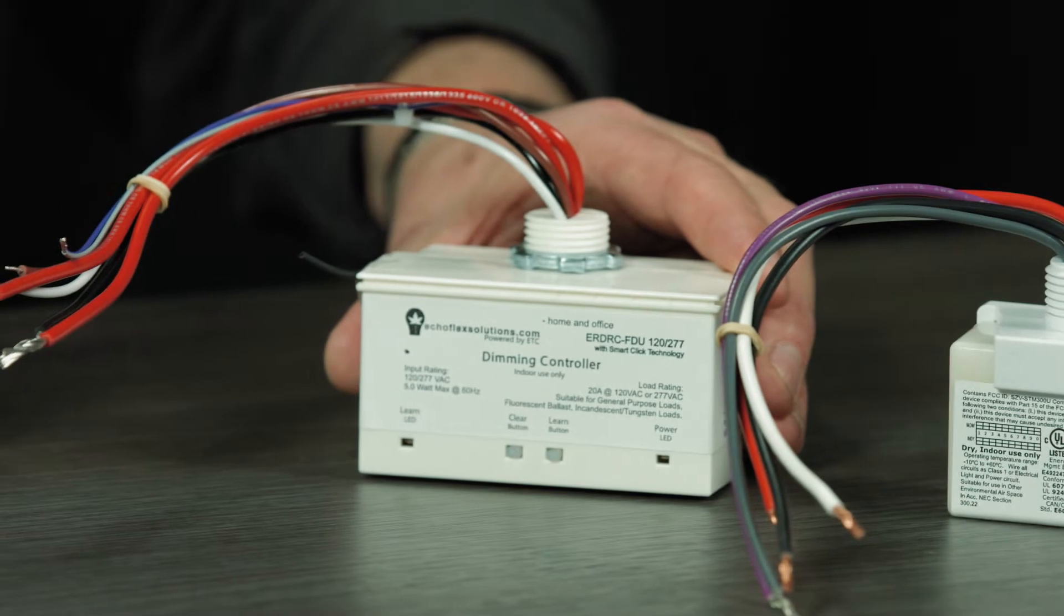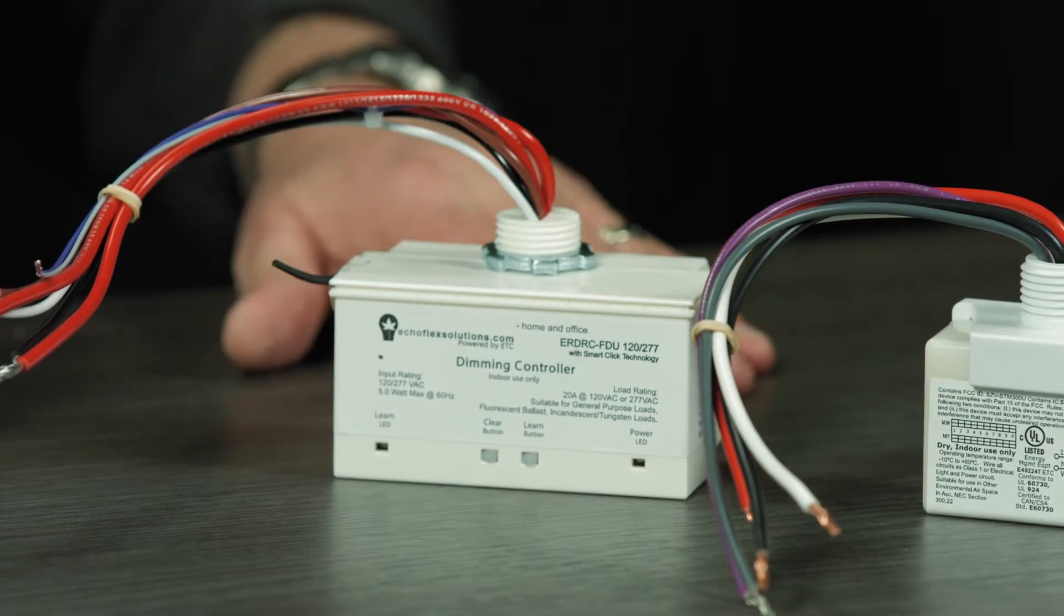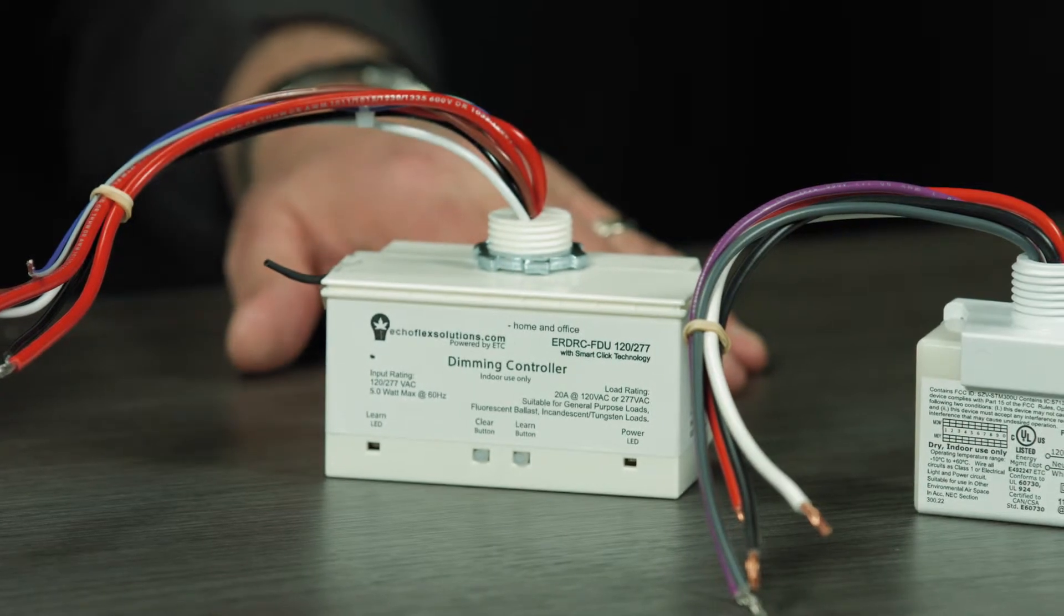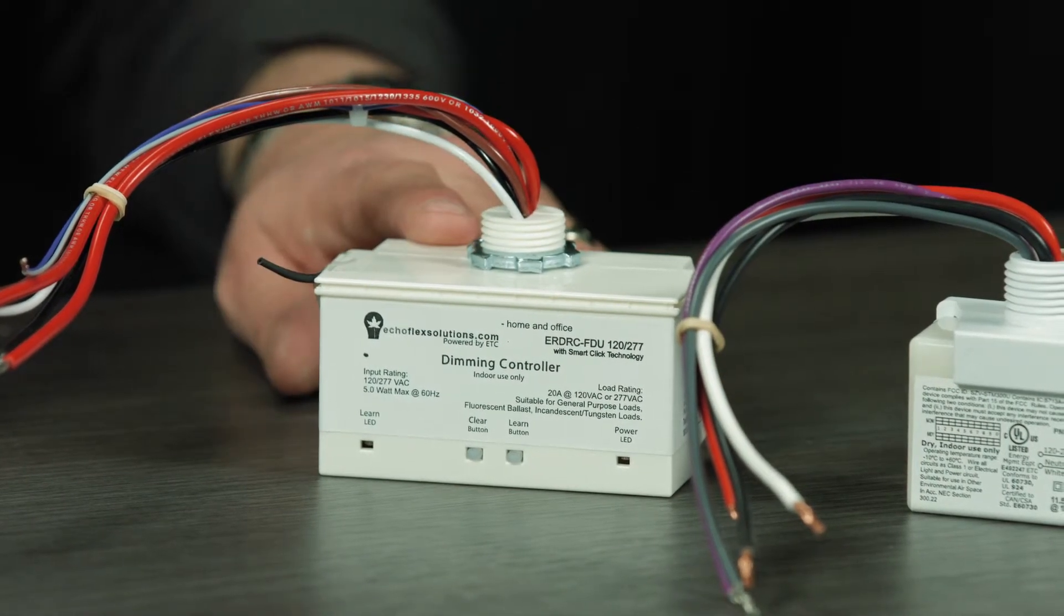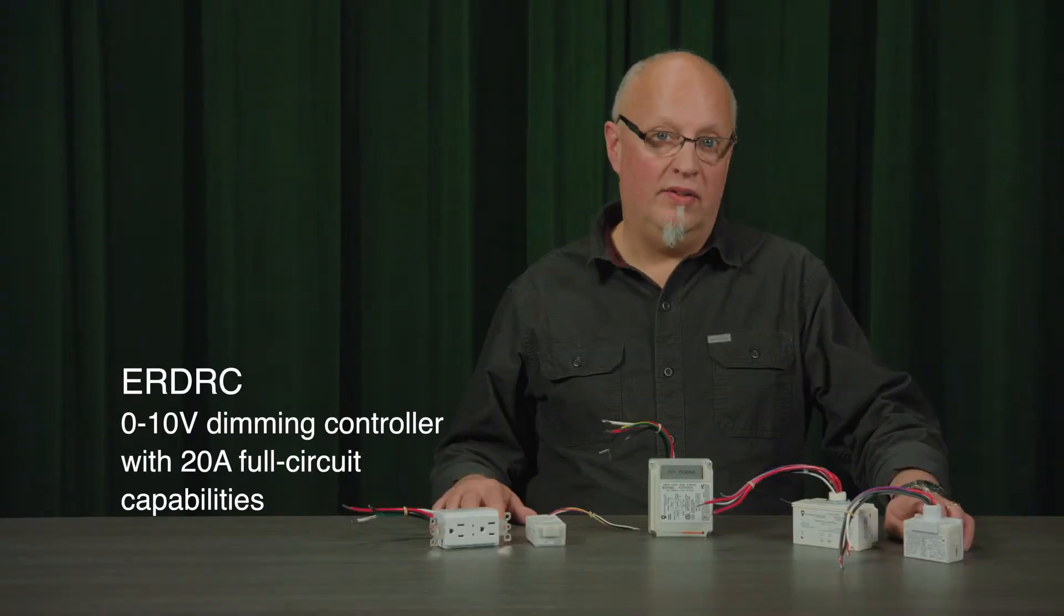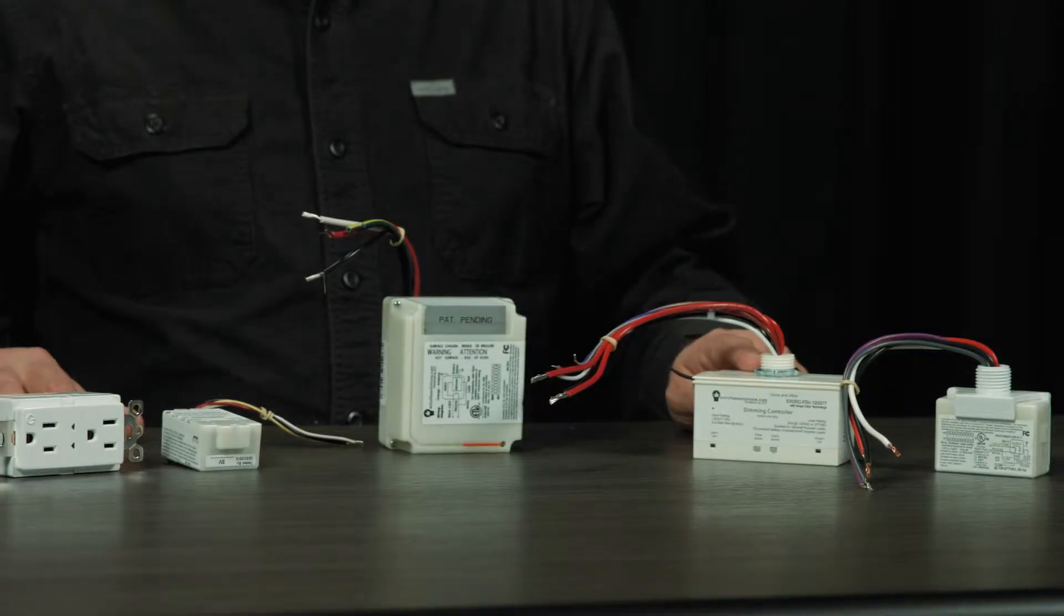Next one in line is the ERDRC-FD or FC. It is also a power pack style 0 to 10 volt dimming controller. It has a 20 amp relay in it. The E-LED1 has an 11.5 amp relay, so this guy is applicable for full circuit control. Available with 120, 277 or 347 volt for Canadian applications.